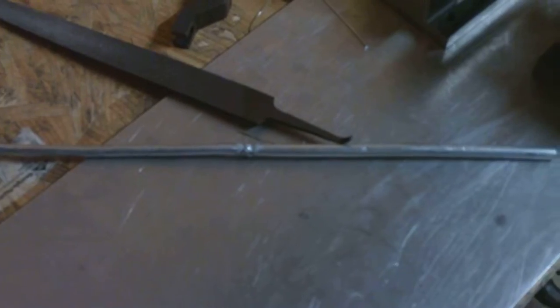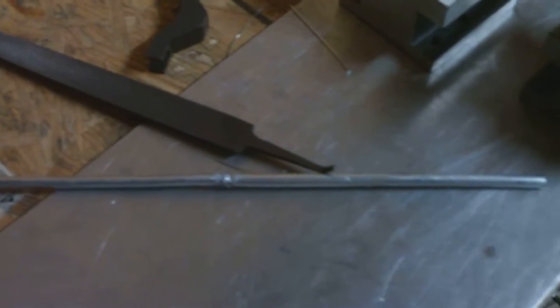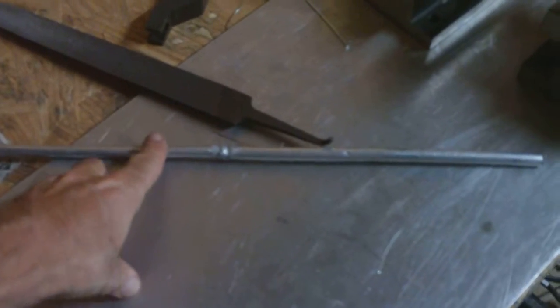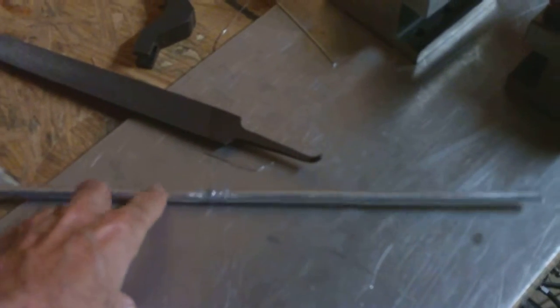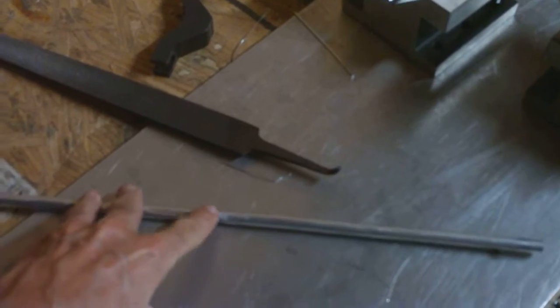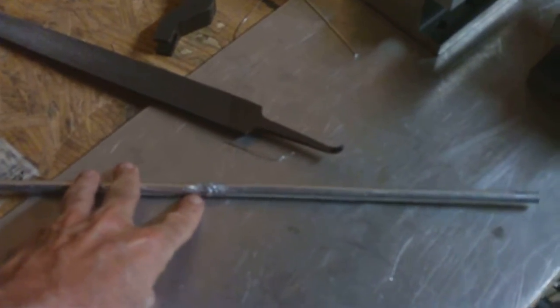I actually finally got a decent weld on here. The camera doesn't do it justice, but I've looked at some other YouTube videos. There's the tube right there, sitting next to a file just for comparison of size. 3/8 OD thin-walled stuff, and this is a butt weld, by the way.